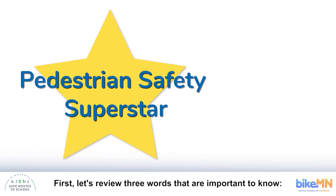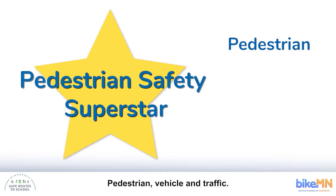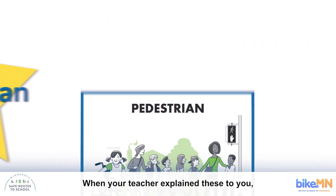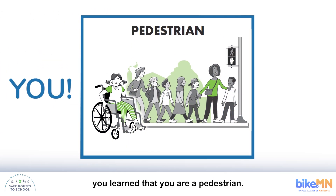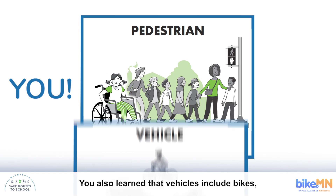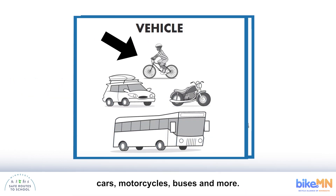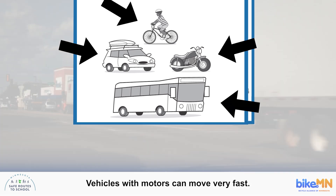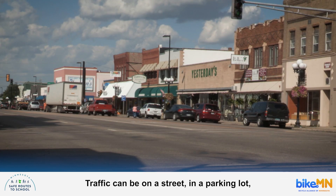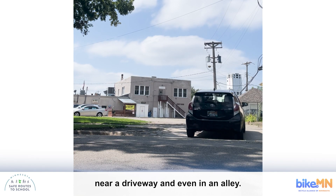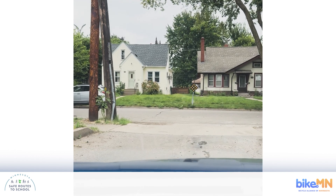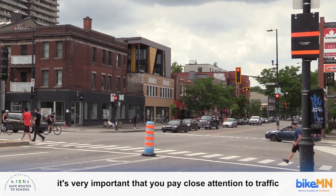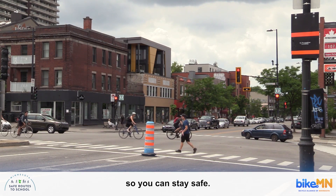First, let's review three words that are important to know: pedestrian, vehicle, and traffic. When your teacher explained these to you, you learned that you are a pedestrian. You also learned that vehicles include bikes, cars, motorcycles, buses, and more. Vehicles with motors can move very fast. Traffic can be on a street, in a parking lot, near a driveway, and even in an alley. As a pedestrian, it's very important that you pay close attention to traffic so you can stay safe.